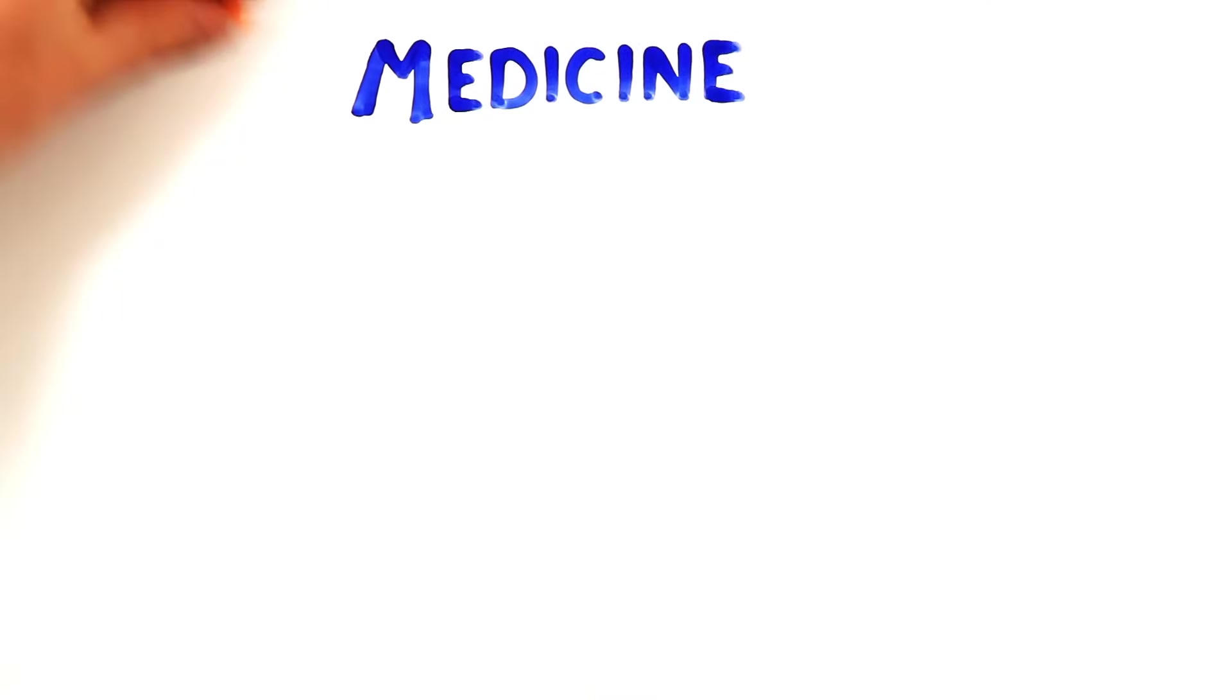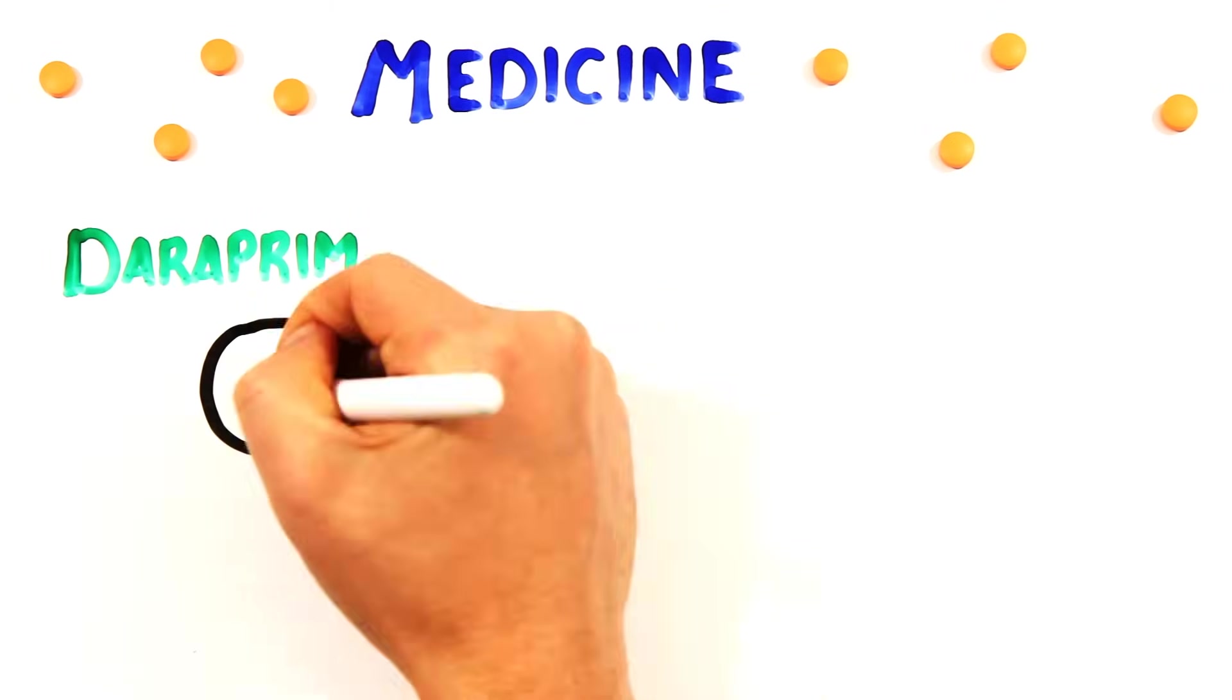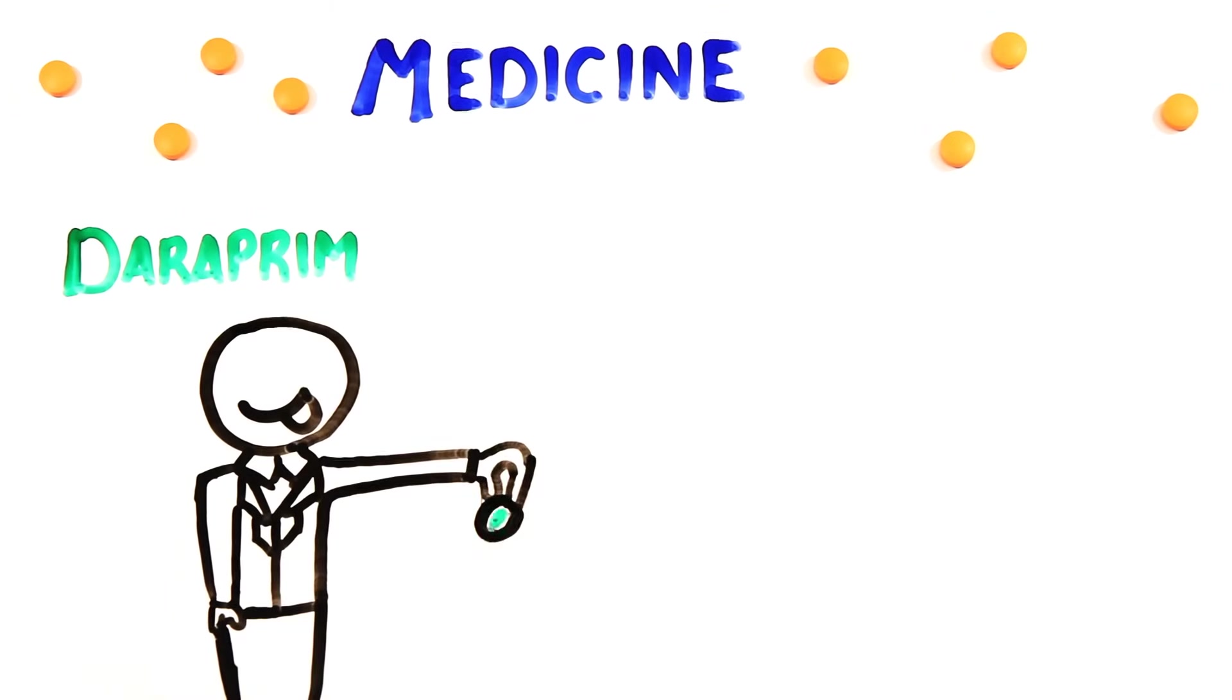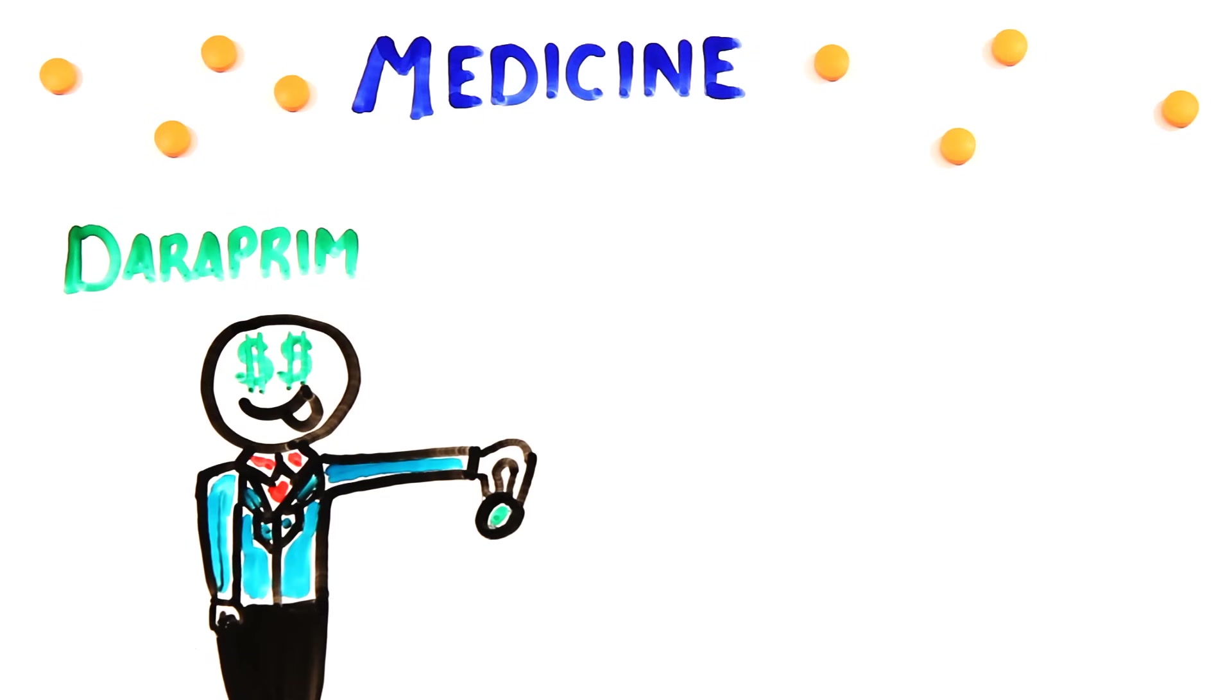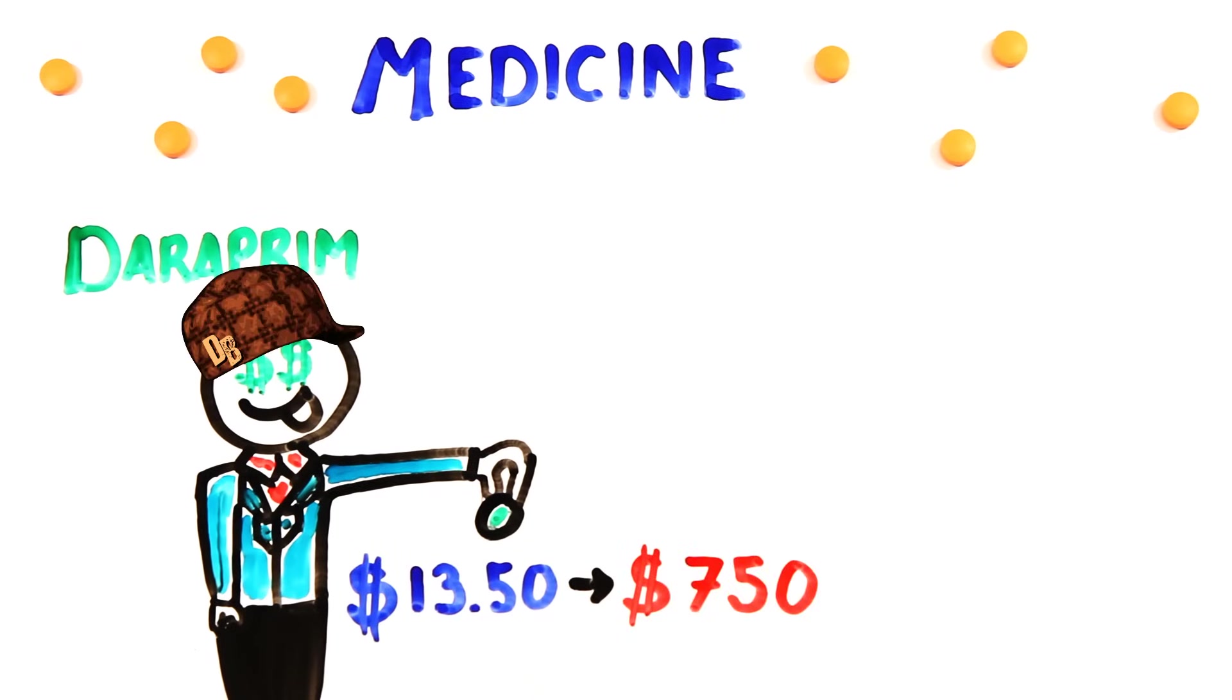Nowadays, there is medicine that helps fight these opportunistic infections, like Daraprim, which was recently in the news when Martin Shkreli of Turing Pharmaceutical decided to raise the price from $13.50 to $750 per pill.